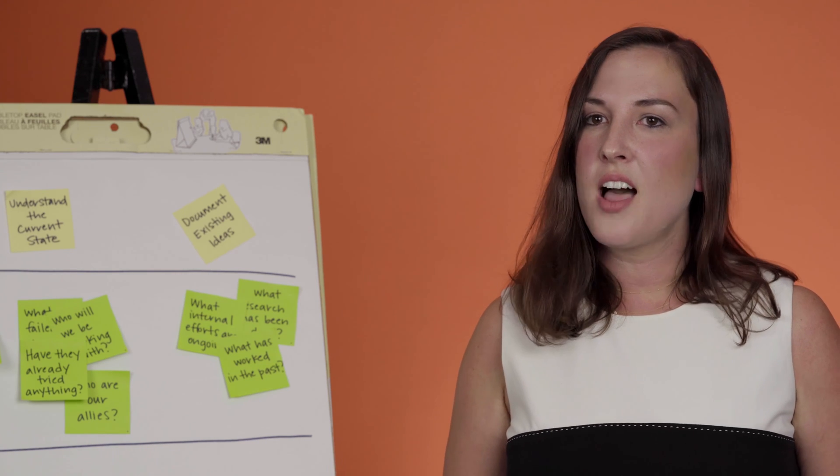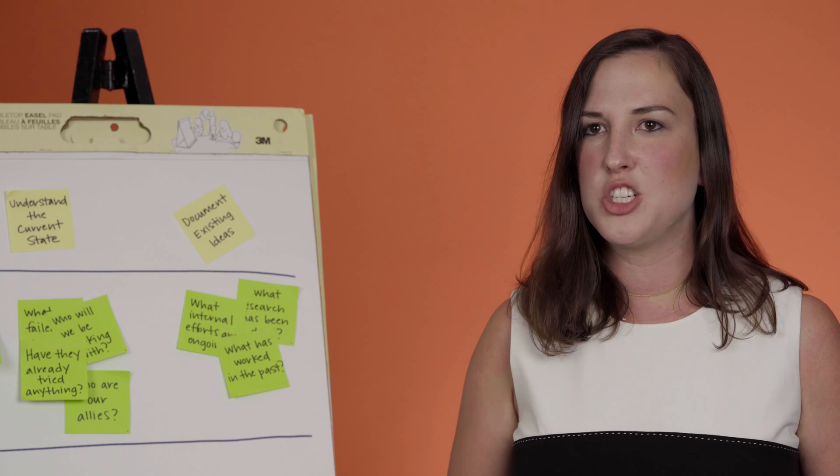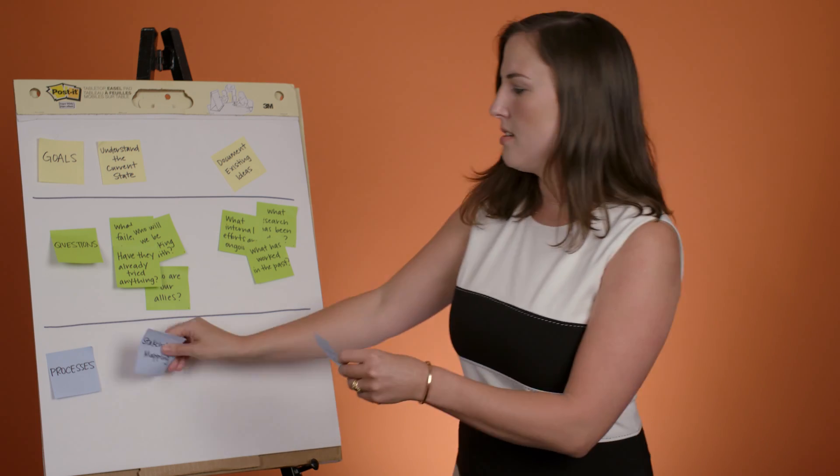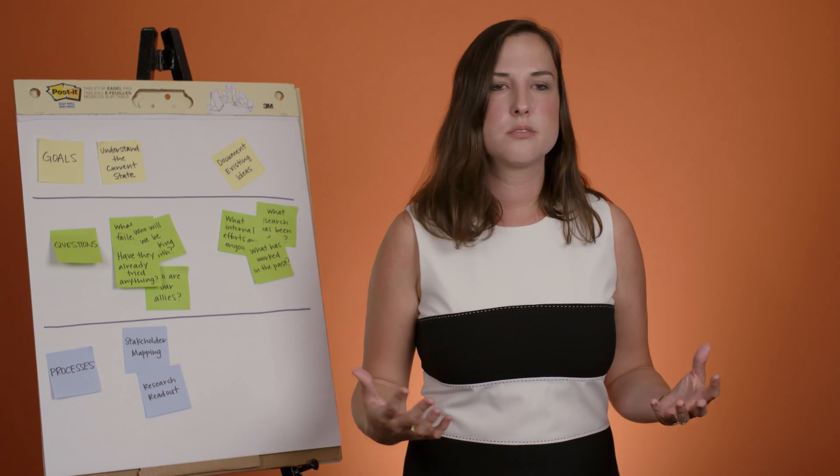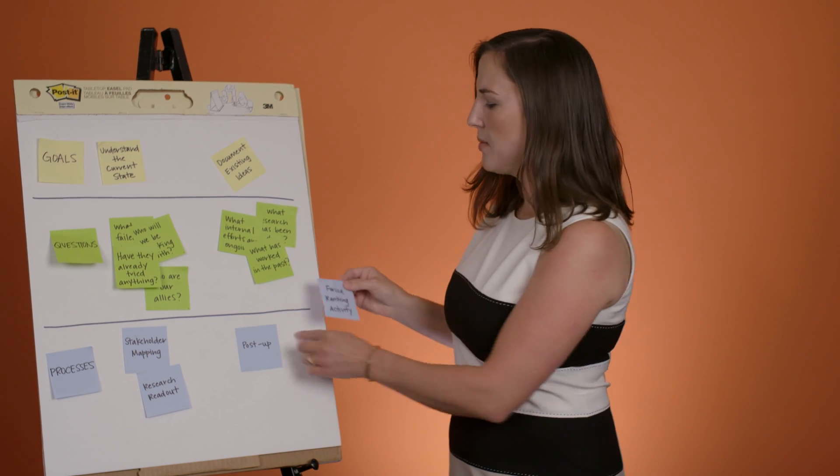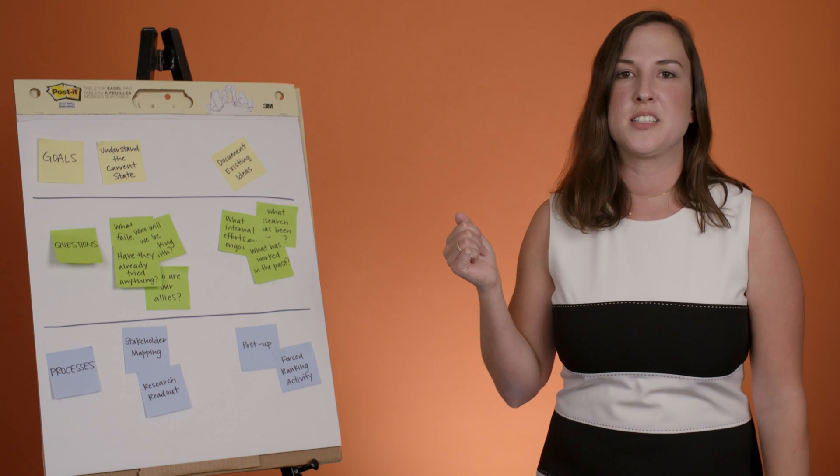Finally, as a third step, align activities that will actually help you answer your questions and lead you to your goals. Perhaps a stakeholder mapping activity and a research outlook would help me understand the current state. Maybe a post-up to understand what existing ideas the team has, and maybe a forced ranking activity would help me document existing ideas.